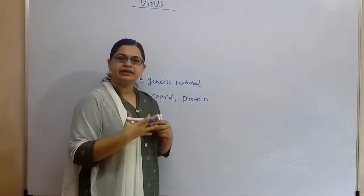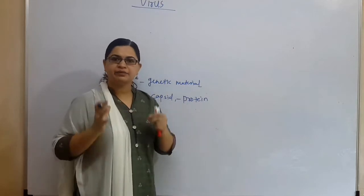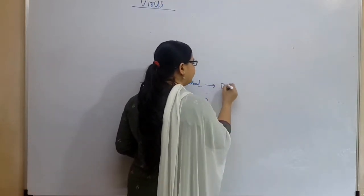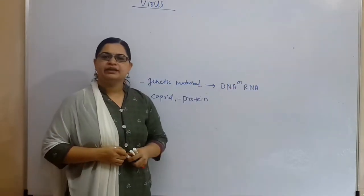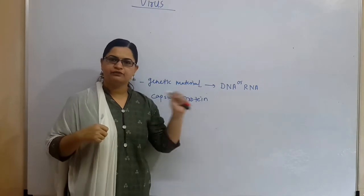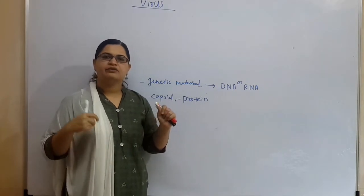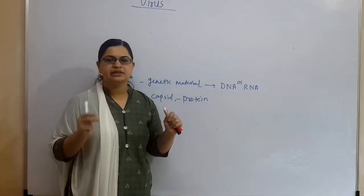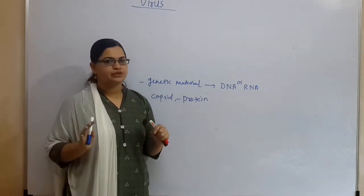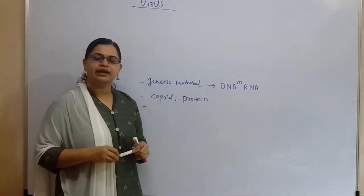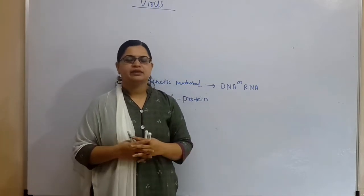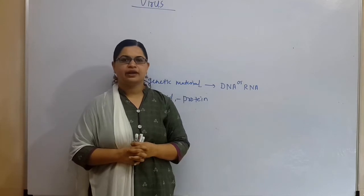The genetic material in plant and animal viruses is in the form of DNA and RNA — never both of them at the same time. Either one of them would be the genetic material. The protein coat is called capsid. So these are only two things: genetic material and a protein sweater.